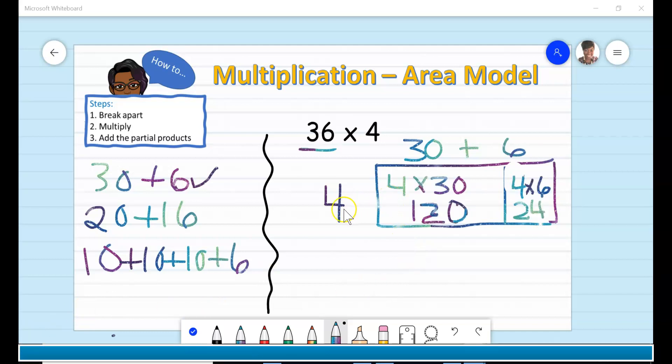Now I am ready to multiply. I multiplied 4 times 30, which gives me 120, and 4 times 6, which gives me 24. Now that I have multiplied, I am ready for part three, adding the partial products, 120 and 24, which equals 144. So I know that 36 times 4 equals 144.